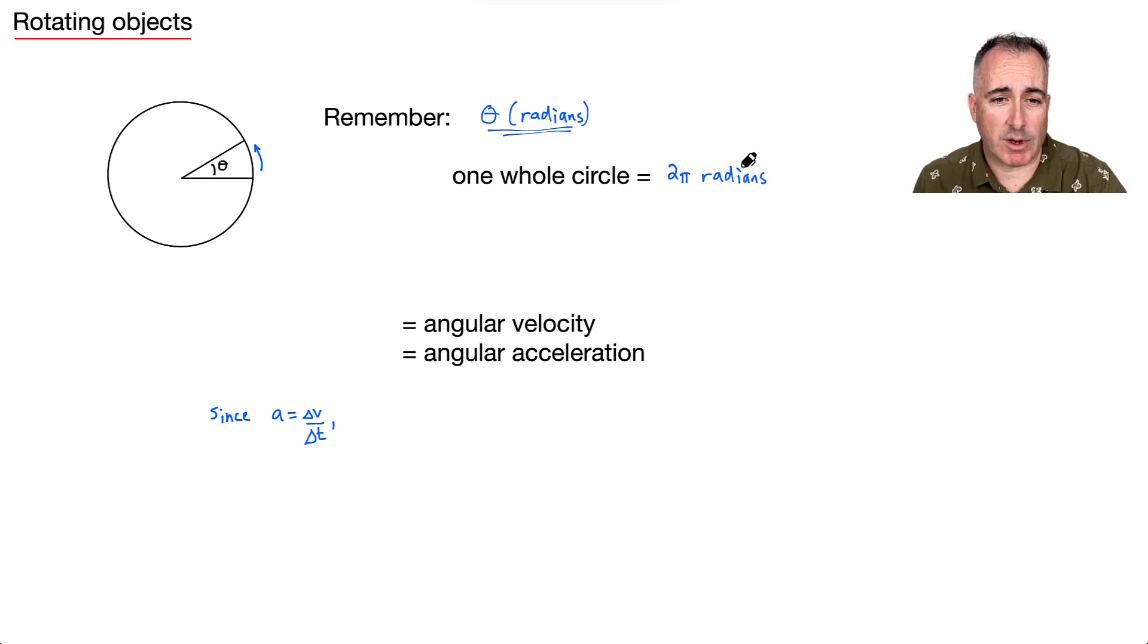And we're going to have some equations in here. We're going to have, not equations, but variables. We're going to have omega, which is angular velocity. And that's going to be measured in radians per second. We've seen that before in another chapter. And we have angular acceleration, which is alpha. That's going to be in radians per second squared.